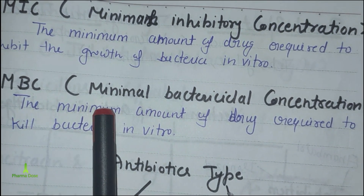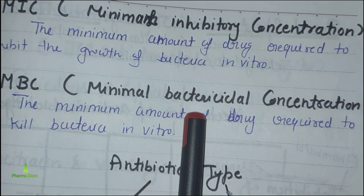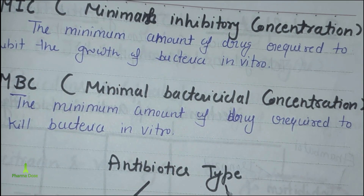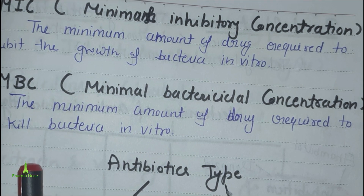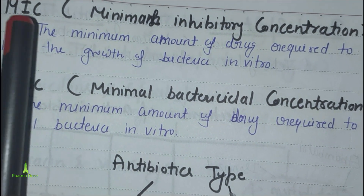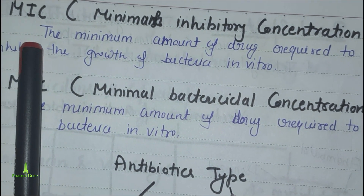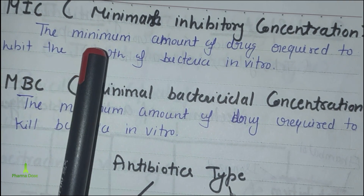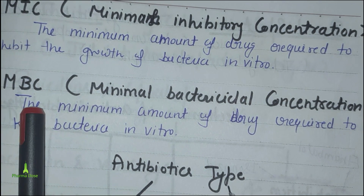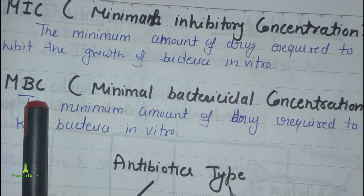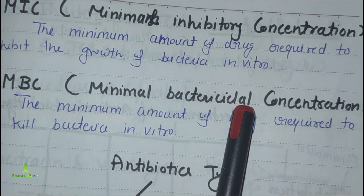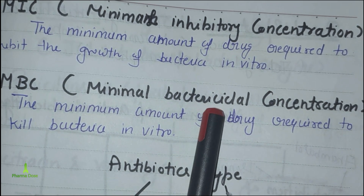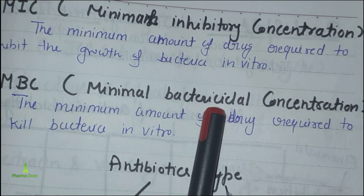MBC stands for Minimum Bactericidal Concentration — the minimum amount of drug required to kill a given bacteria. In MIC, the goal is to inhibit growth; in MBC, the goal is bactericidal — to kill the bacteria. Cidal means to kill or cause death, while static means to inhibit growth.